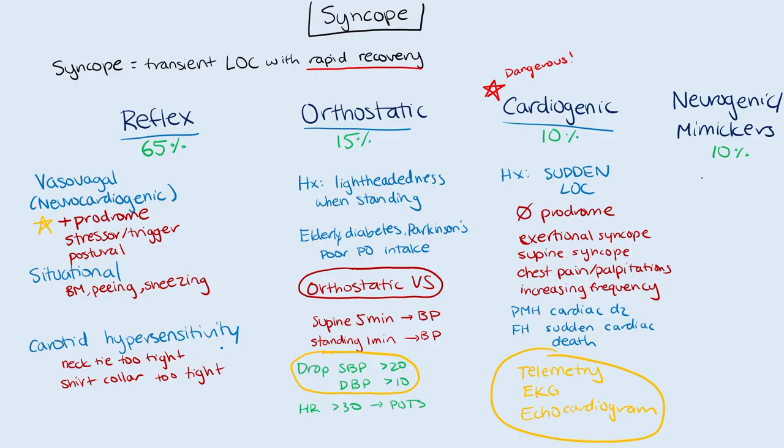Neurogenic causes and mimickers include seizures, subclavian steal syndrome, and vertebrobasilar insufficiency. For seizures, the patient will have a prolonged post-ictal state. Importantly, a patient with any cause of syncope may have a few beats of myoclonic jerks — but this alone is not concerning for seizure unless prolonged. With regular syncope, jerks last less than 15 seconds and occur after loss of consciousness. With seizures, jerks begin at onset of loss of consciousness, last longer than 15 seconds, and are followed by a prolonged post-ictal state.